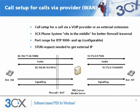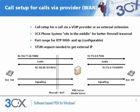Just as for internal calls, each endpoint or extension has one RTP audio channel and one RTCP control channel. In this example, extension 144 is an external extension that's calling extension 107, which resides on the LAN. Extension 144 will use the PBX server to set up the call, just as for an internal call.